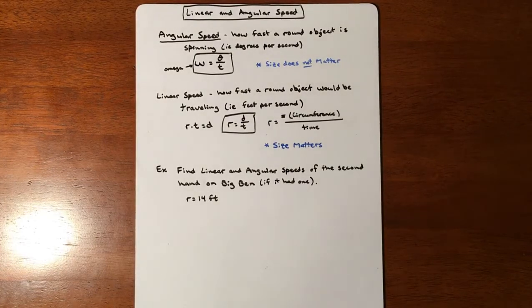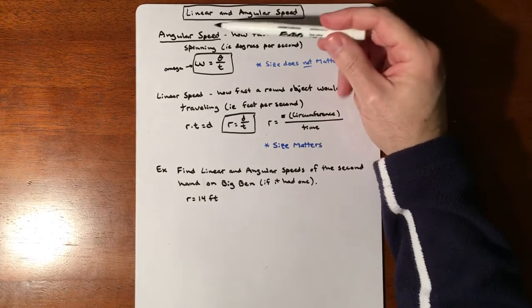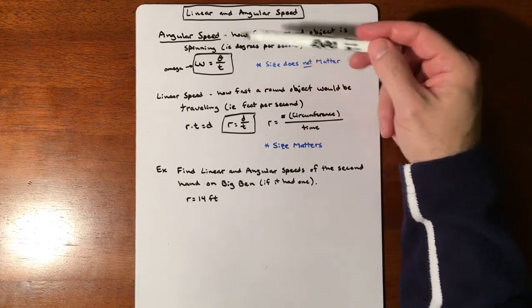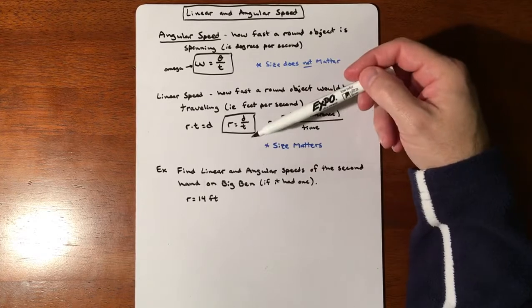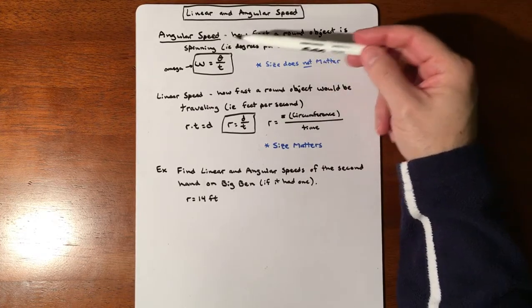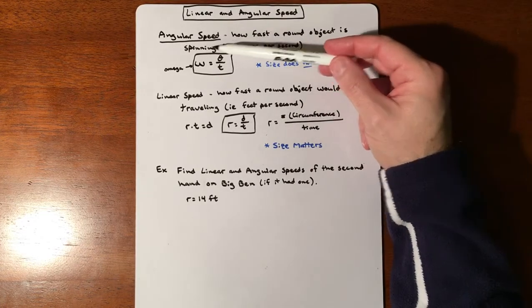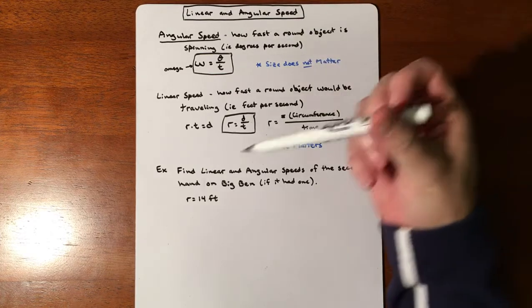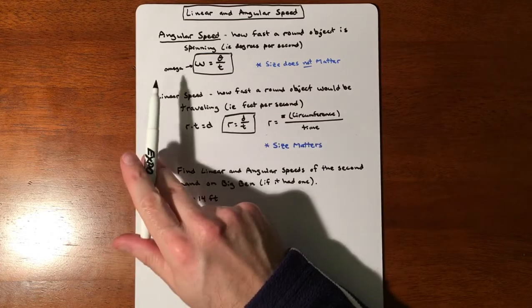In this lesson we're going to talk about linear and angular speeds. They're similar but they're also very different. Angular speed is how fast a round object is spinning, like a second hand on a wristwatch. Basically, your angular speed is always degrees per second or radians per second.